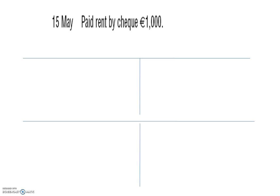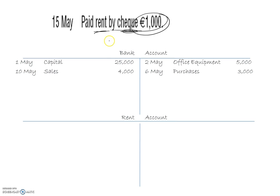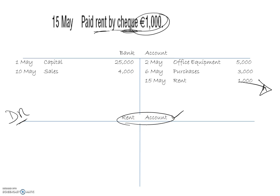15th of May: paid rent by cheque. Cheque means money is coming out of the bank — 1,000 — and rent is an expense. We don't have a rent account so we open one up. It's money coming out so we credit the bank: 15th of May, 1,000. We debit the rent account: 15th of May, bank, 1,000. Most expense accounts, whatever they happen to be, the entry goes in on the debit side.